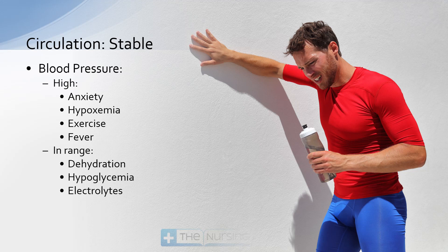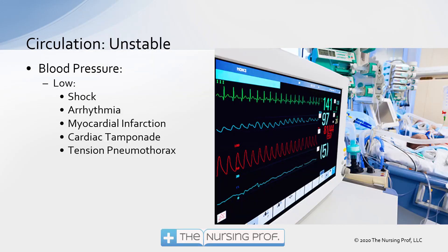If the blood pressure is in a normal range, we might consider early signs of dehydration, hypoglycemia, or electrolyte disorders. If the blood pressure is low, indicating that the tachycardia is unstable, then we think about things normally associated with tachycardia and hypotension: shock, arrhythmia, myocardial infarction, cardiac tamponade, and tension pneumothorax. All of these situations can cause a low cardiac output state, thereby decreasing blood pressure.